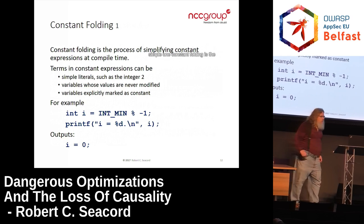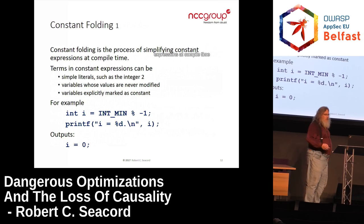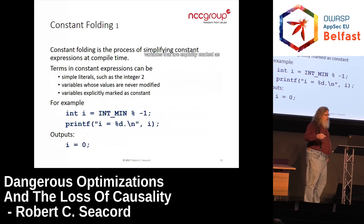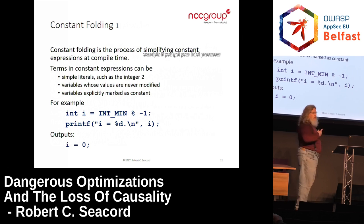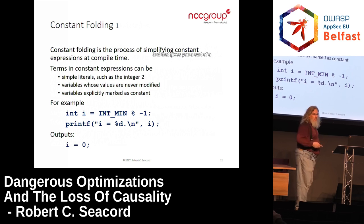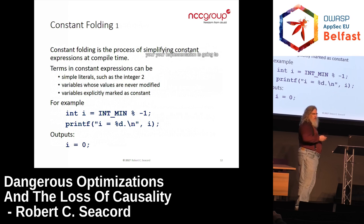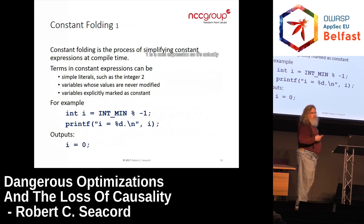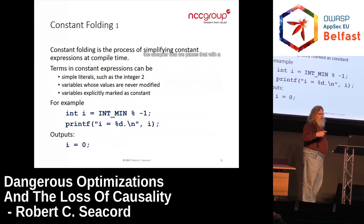Constant folding is the process of simplifying constant expressions at compile time. Constant expressions can be simple literals, variables never modified, or variables explicitly marked as constant. For example, if you take INT_MIN remainder minus one and print the result, it says zero. But what's happening is that INT_MIN remainder minus one is a constant expression, so the compiler replaces it with zero — no runtime code is being generated.